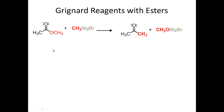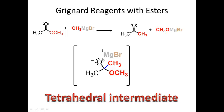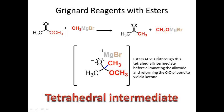If I treat an ester with a Grignard, the product is a ketone. The alkoxide — the OCH₃ part of the ester — leaves with magnesium bromide as a counter ion. Esters go through a similar tetrahedral intermediate where the OCH₃ group is present and the Grignard has broken the pi bond. The difference is that instead of proton transfer, the intermediate eliminates to get rid of the OCH₃ group.